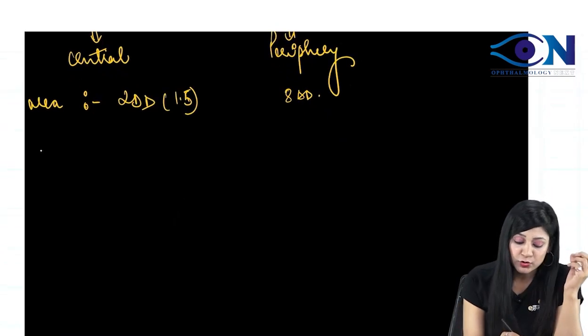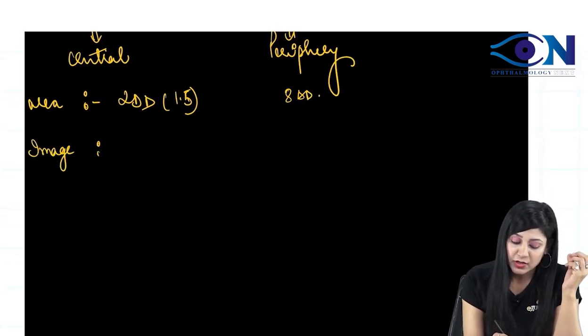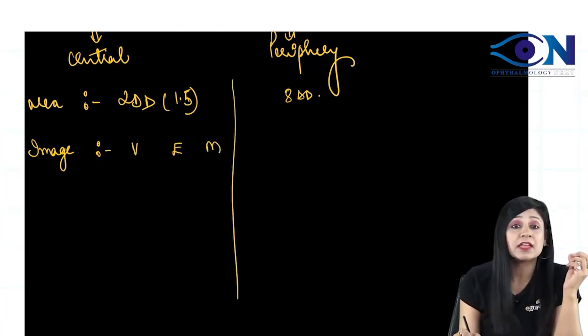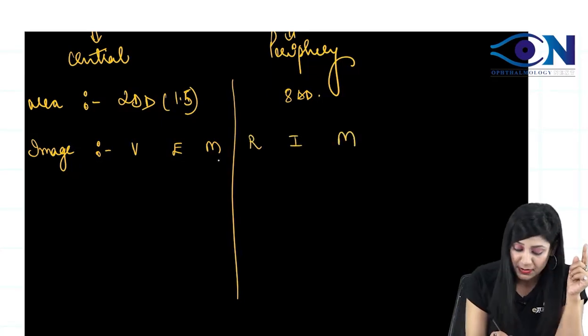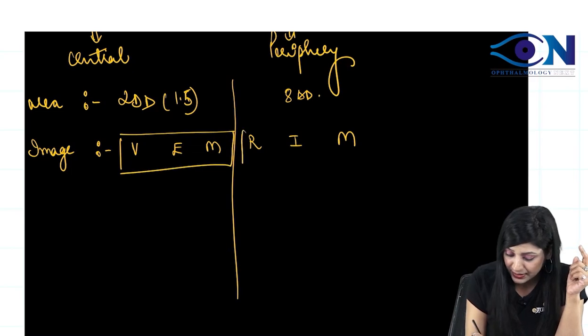Similarly, if you look at the image formation, image by the direct ophthalmoscopy is virtual, erect, and magnified. By the indirect, it is real, it is inverted, and it is magnified. So, you can easily remember by the VIM and by the RIM.